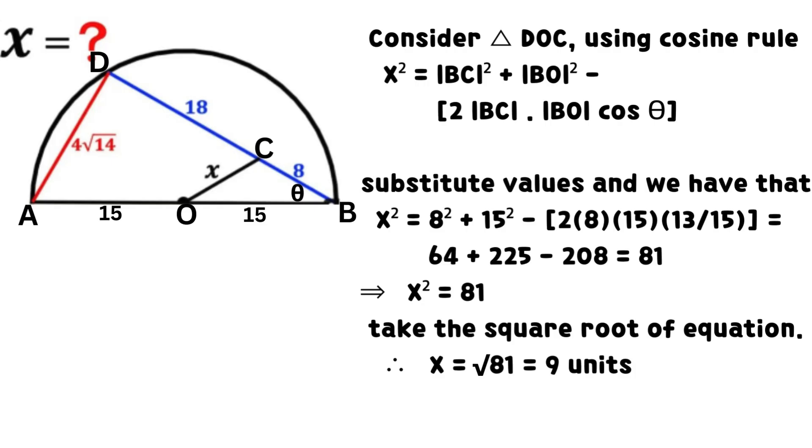Substitute values and we have that x² equals 64 plus 225 minus 208, which equals 81. Take the square root of equation. Therefore, x equals √81, which equals 9 units.